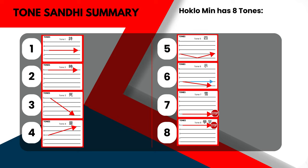While each tone has its own contour, this is only true when a tone is spoken independently or at the end of an utterance. Almost all syllables except for the final syllable of an utterance undergo tone Sandhi, which means that the vast majority of syllables spoken undergo tone Sandhi — which is basically just a system of tone change.